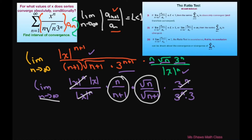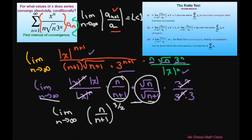When you take the limit you're going to get 1 here and 1 here. So basically you're going to get the limit as n approaches infinity. Since these are the same you could write it as n divided by (n+1) to the power of 3/2. Pull this out: absolute value of x divided by 3. Now this just goes to 1 since our degrees are the same. So our answer is absolute value of x divided by 3.